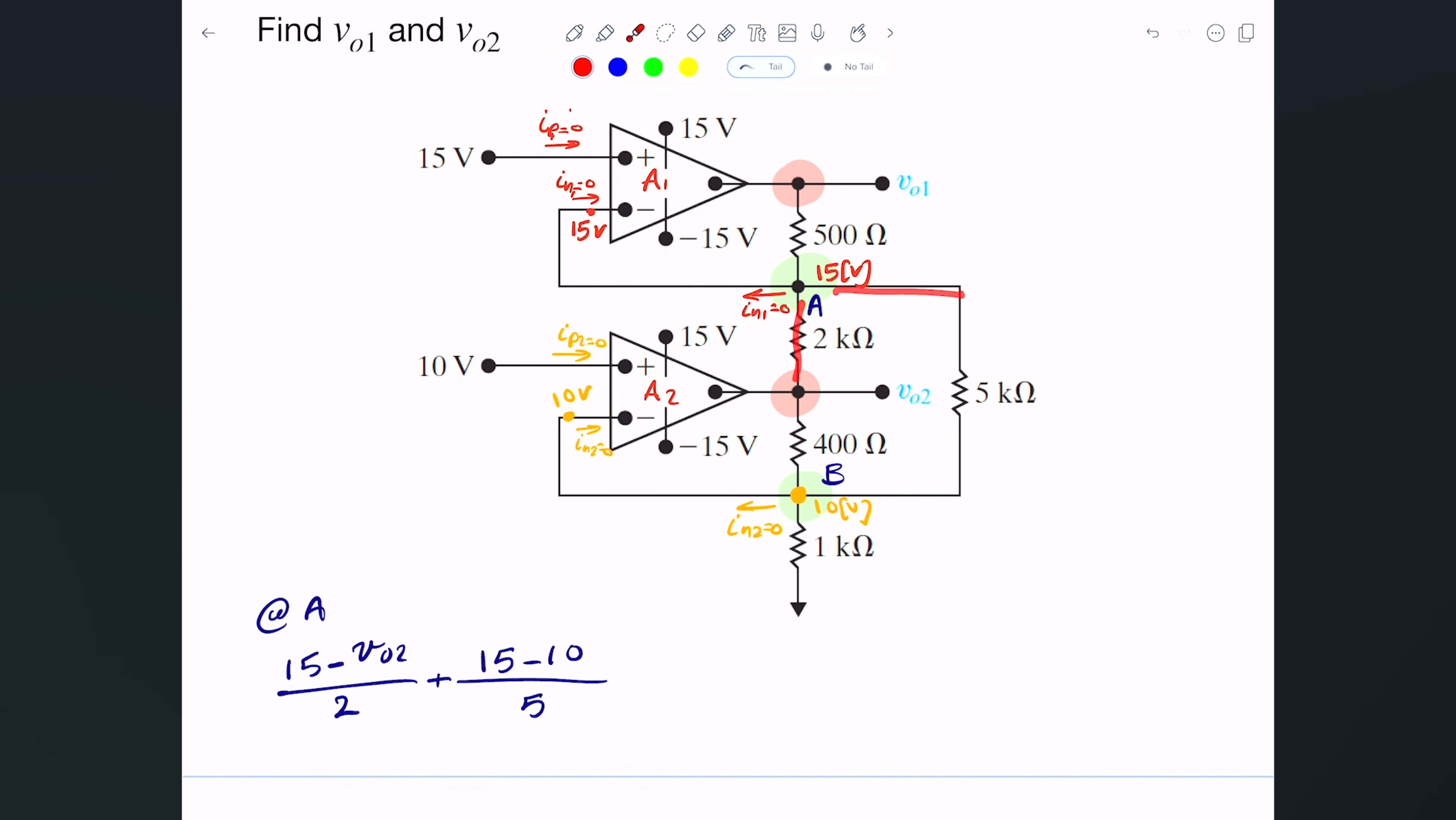We got this, we got that. Now that leaves us with this one here. That's plus 15 minus V output 2, or actually V output 1, divided by the 500 ohms, or 0.5. Since everything is in kilo ohms, let me make sure I do this 0.5 kilo ohms, so everything is in milliamps.